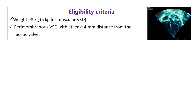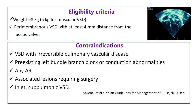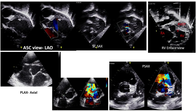The Indian guideline states the weight should be more than 8 kg, and for muscular VSD more than 5 kg. For perimembranous VSD, it should be at least 4 mm away from the aortic valve. Contraindications include pulmonary vascular disease, conduction anomaly, progressive aortic regurgitation, any associated condition requiring surgery, or inlet or sub-pulmonary VSD — in these cases we should not close.